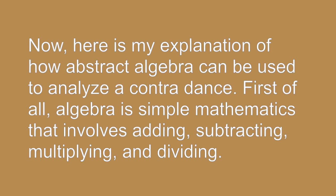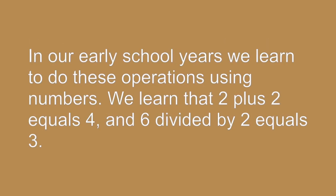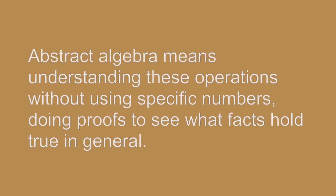Now here is my explanation of how abstract algebra can be used to analyze a Contra dance. First, algebra is simple mathematics that involves adding, subtracting, multiplying, and dividing. In our early school years, we learned to do these operations using numbers — we learned that 2 plus 2 equals 4, and 6 divided by 2 equals 3. Abstract algebra means understanding these operations without using specific numbers, doing proofs to see what facts hold true in general.